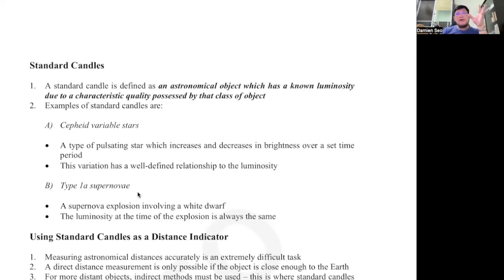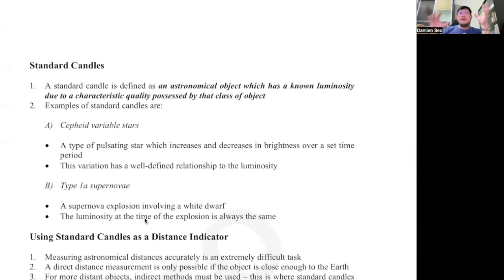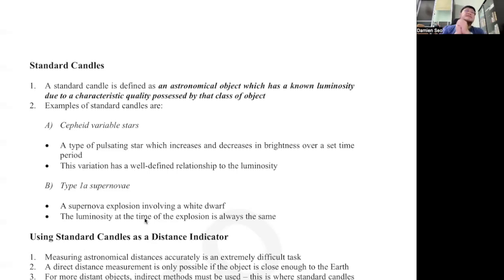Another type of standard candle is a Type 1a supernova. Every time you see a supernova in a distant galaxy, that luminosity is always the same — all Type 1a supernovas have the same luminosity.